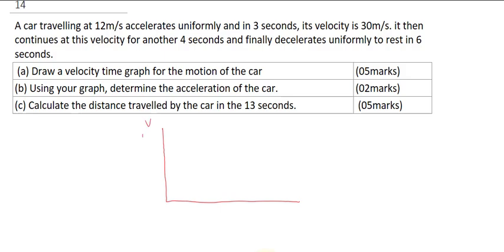Remember, this is your velocity in meters per second and this is your time in seconds. The question says a car traveling at 12 meters per second — so notice it started from 12. It accelerates to 30. Let's call this value 30 and this value 12 on the graph. We are going to represent this information on the graph. Now recall that this is 3 seconds.